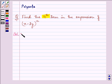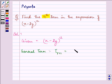Now here, the given binomial expression is (x - 2y)^12. We know that the general term, the (r+1)th term, is equal to nCr × a^(n-r) × b^r.